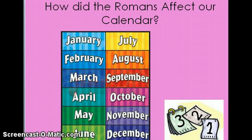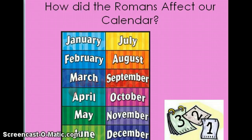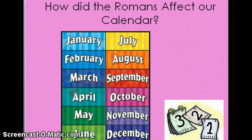March is also named after the Roman god of war. May is named after Maesta, goddess of honor. June is named after Juno, the queen of the gods. If you take all those months out, guess how many months are not named after Romans? Only about five. So again, we had a lot of Roman influence on our calendar.